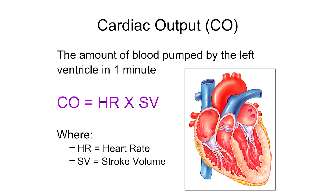Here's a formula for calculating cardiac output. Cardiac output, abbreviated CO, is equal to the heart rate — the number of times the heart beats in a minute — times what's known as the stroke volume. Stroke volume is the amount of blood pushed into the circuit with each contraction of the heart, specifically the blood moving from the left ventricle up into the aorta with each contraction.